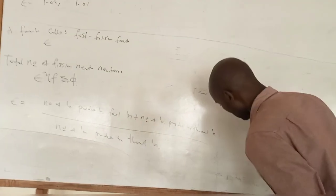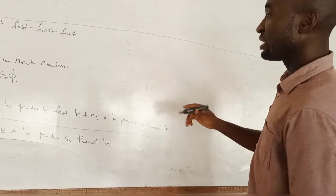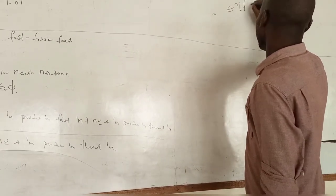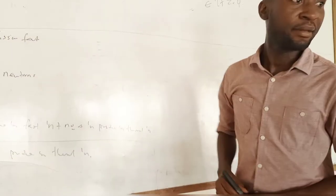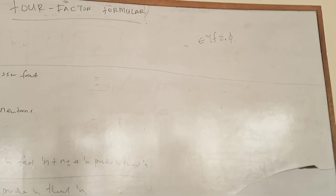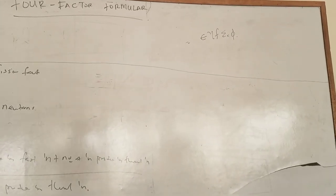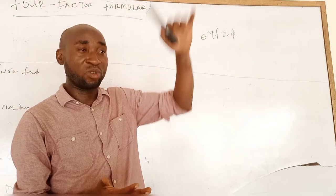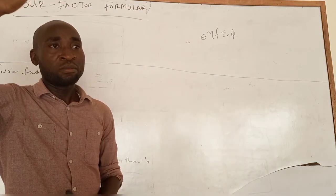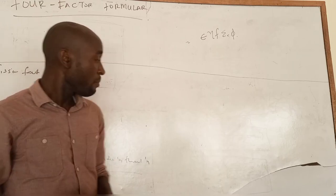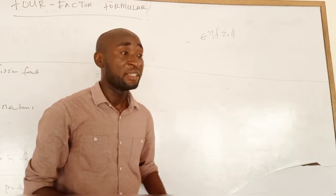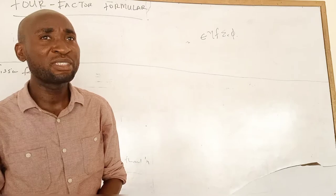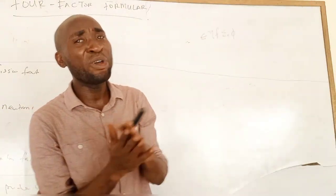So the total number of fission neutrons is now ε·η·f·Σ_A·φ. Now, we must also consider what is called resonance absorption. When neutrons are being slowed down from fast energies to thermal energies, they pass through a resonance region. Within this resonance region, if a neutron is captured, it disappears and cannot be accounted for in the thermal region.